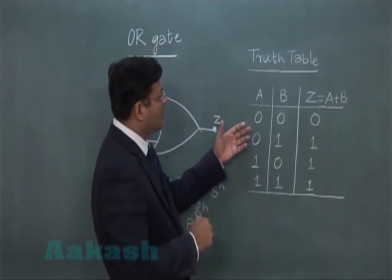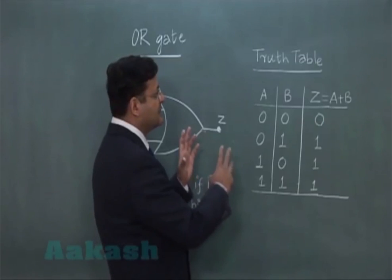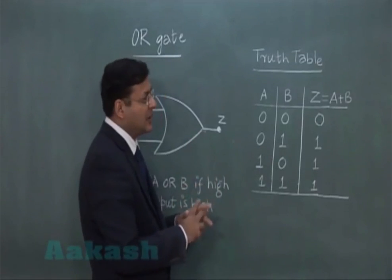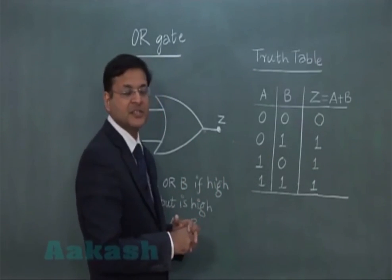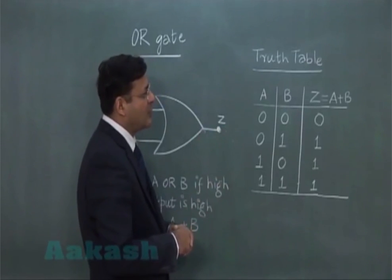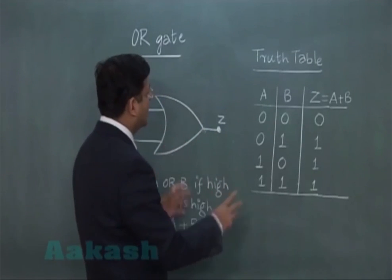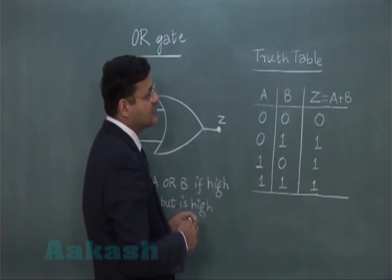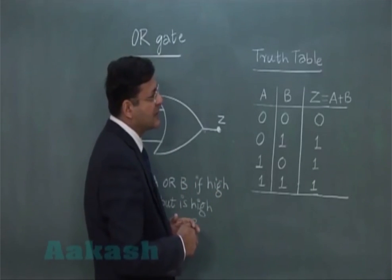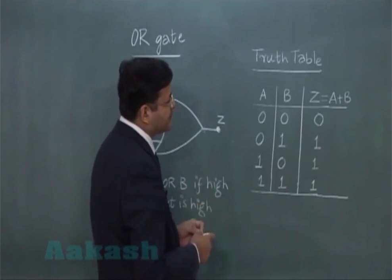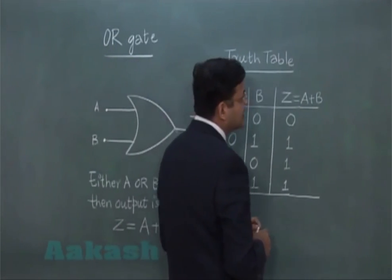Now you see, sometimes in the pulse form, the same thing can be given to you. Like this was the situation in which it came in the form of a truth table. But let us suppose, I try to represent it in terms of some pulse kind of signal. Then you see, you can represent it in this particular fashion.